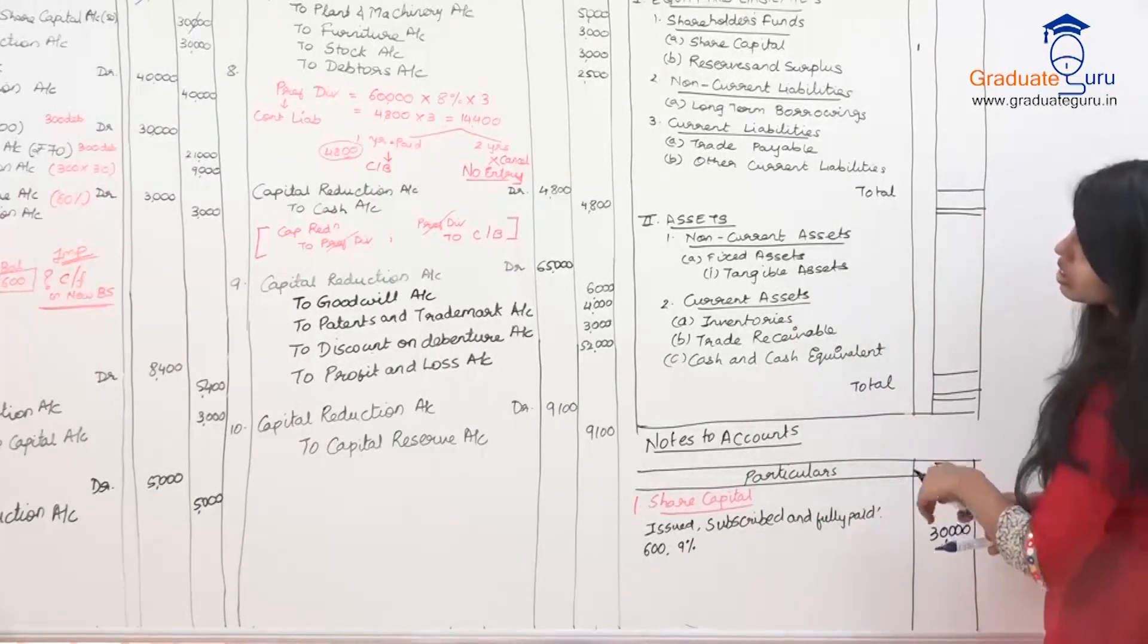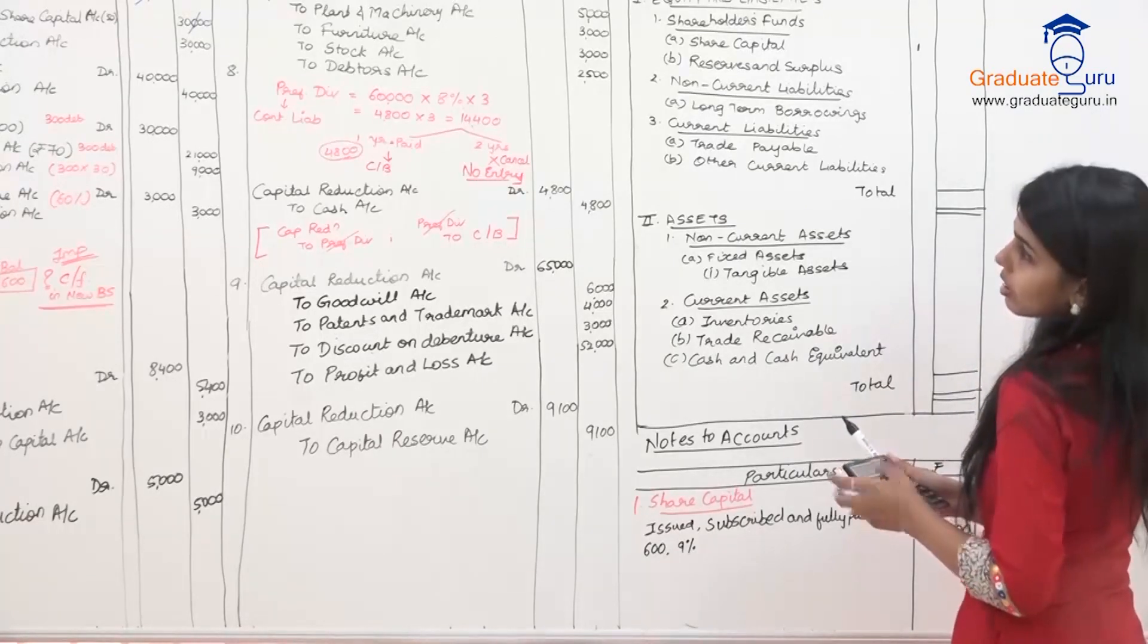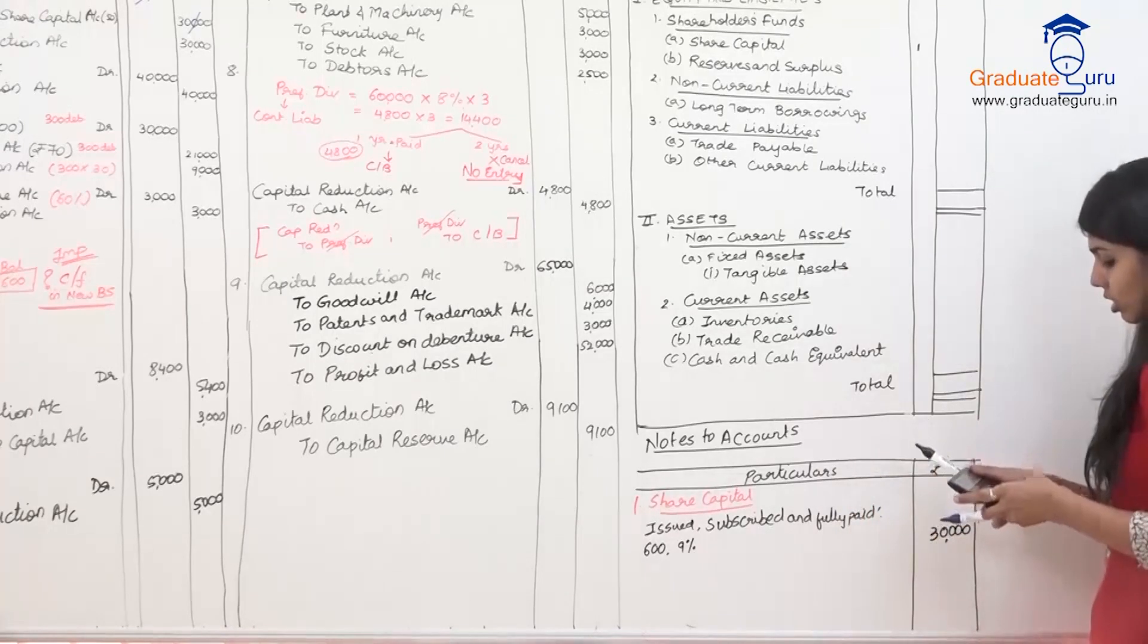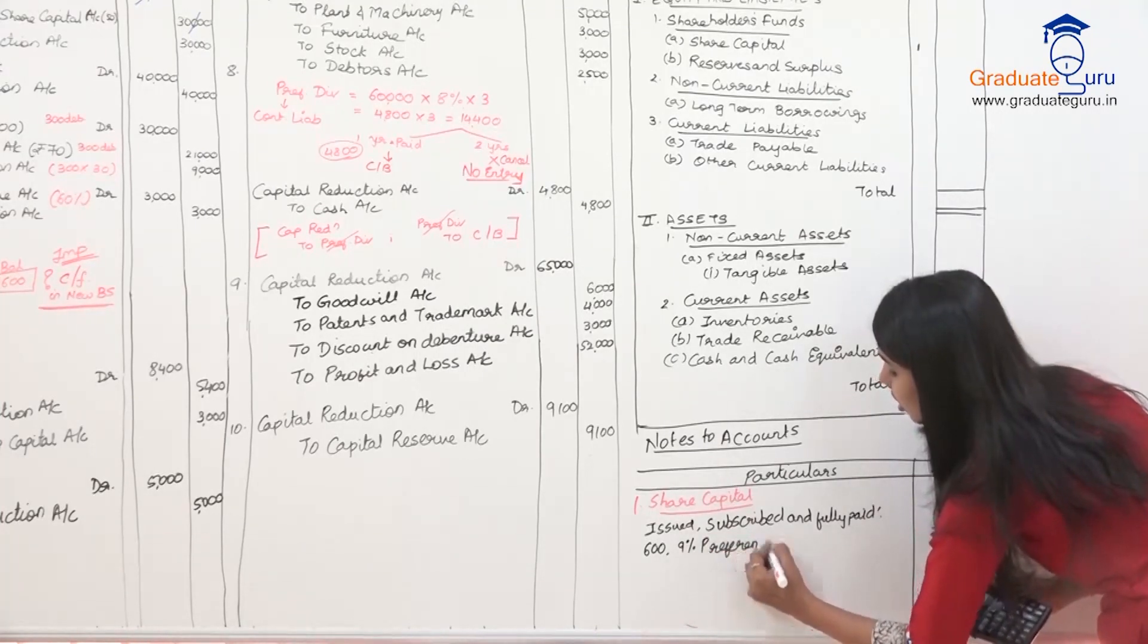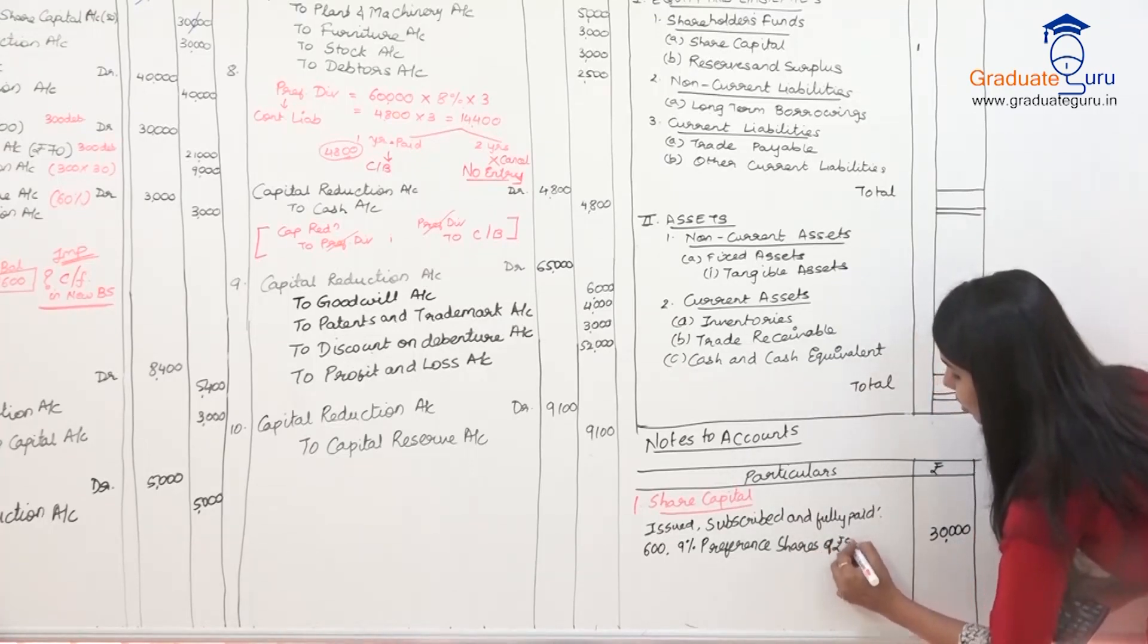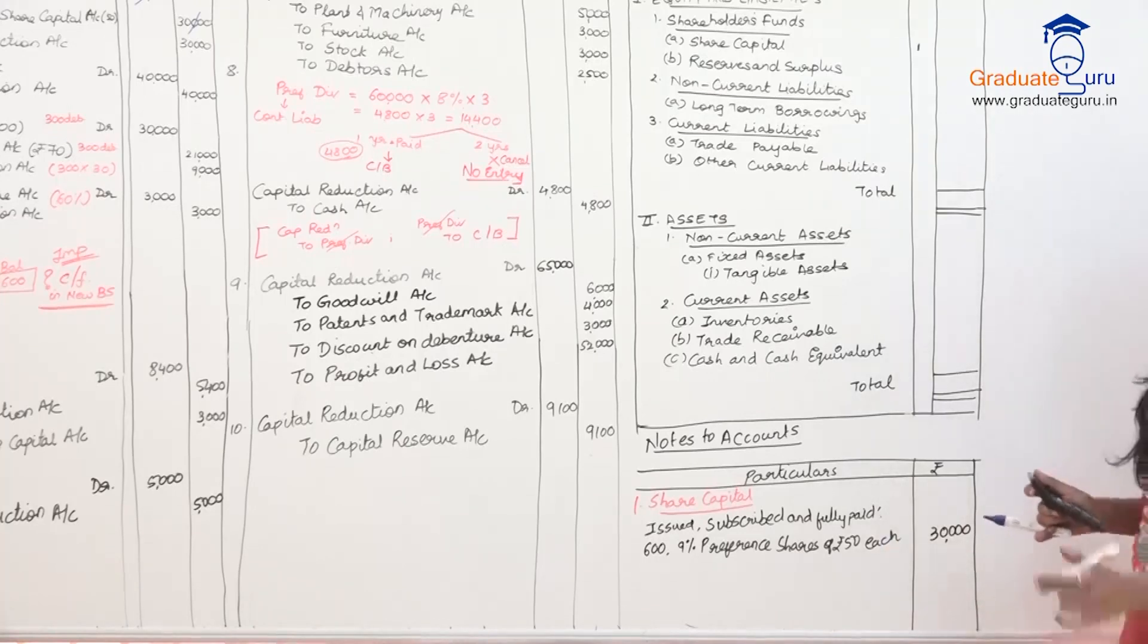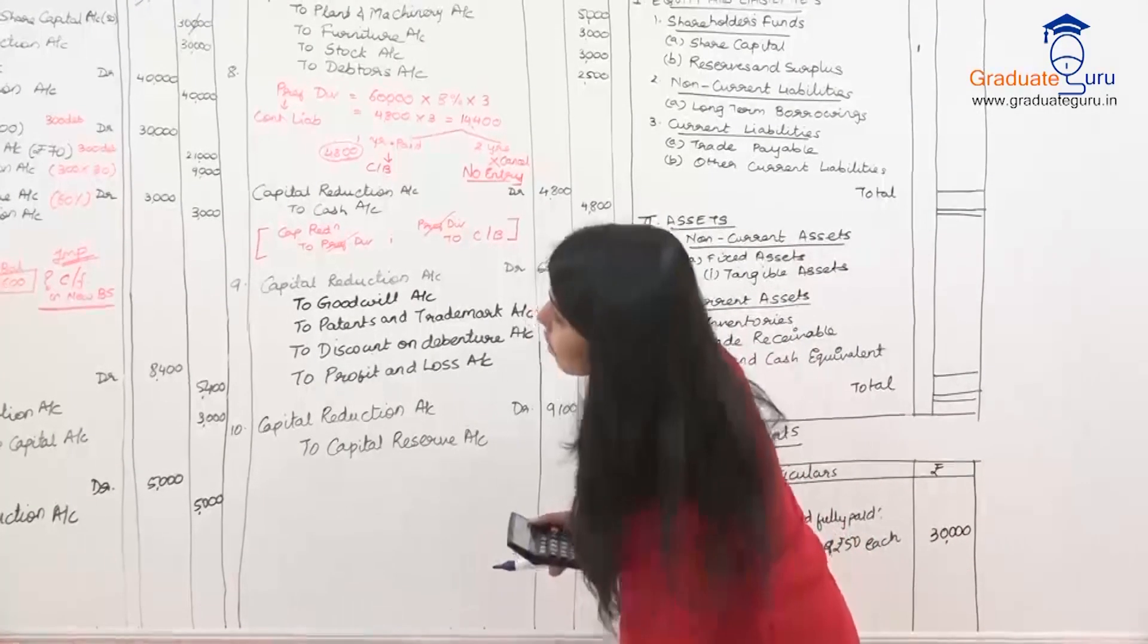9 percent equal to 9 percent. How many people have divided by 50? 9% different shares of Rs. 50 each. What happened? 30,000.